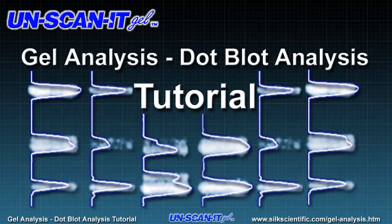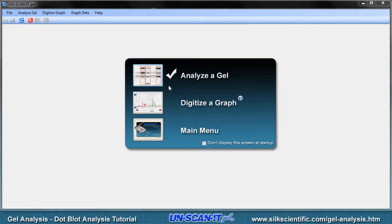Welcome to the gel analysis dot blot analysis tutorial for the Unscannit Gel software. This tutorial will show you how to use the dot blot analysis mode of the Unscannit Gel software to quantify dot blot images. When the software is opened, a start-up screen will appear and a pop-up menu will allow you to analyze a gel. This option can also be selected from the main Analyze Gel menu or the Analyze Toolbar.